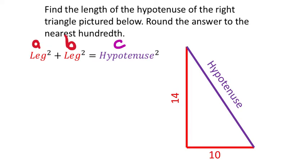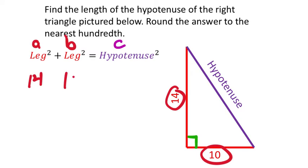I purposely color-coded this so we understand that we are dealing with two legs. We know those are the two legs because there's the right angle right there — the legs make up the right angle. These two values: it doesn't matter which order you put them in, a leg is a leg. I'll put 14 first and then 10 second.